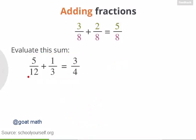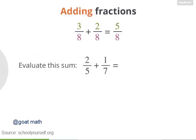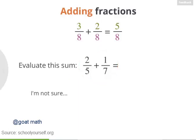And if we erase a few of these dividing lines, we can see that this simplifies to 3 fourths. So 5 twelfths plus 1 third equals 3 fourths. Whenever you're adding fractions with different denominators, you should rewrite them so they have the same denominator and then add them together. Try another example. What's 2 fifths plus 1 seventh? If you get stuck, click over here and we'll figure this out together.